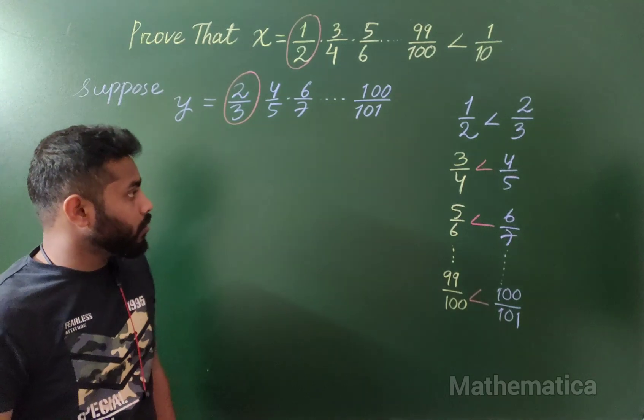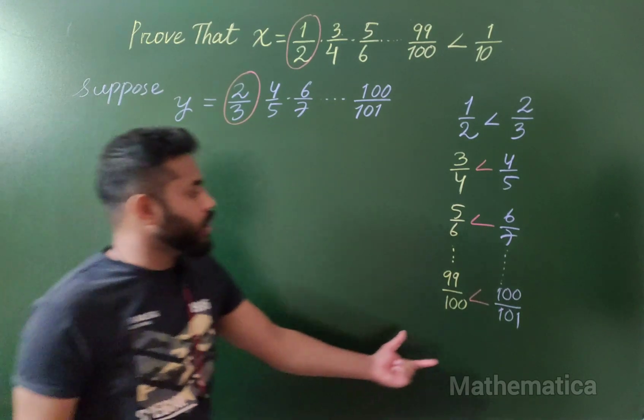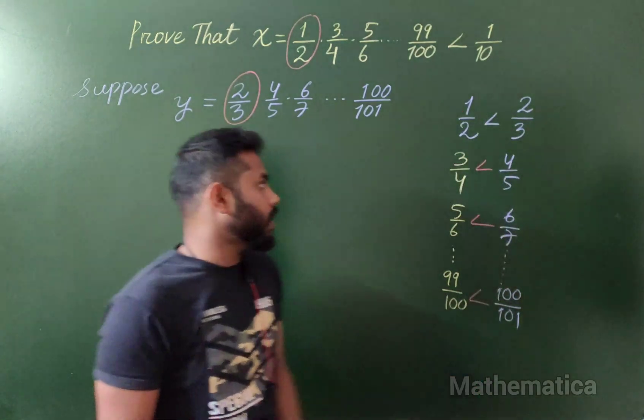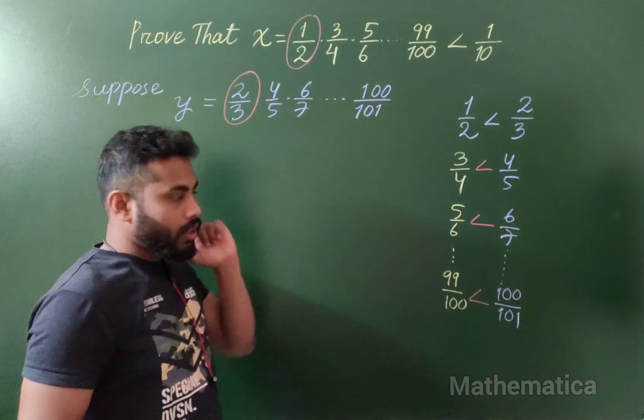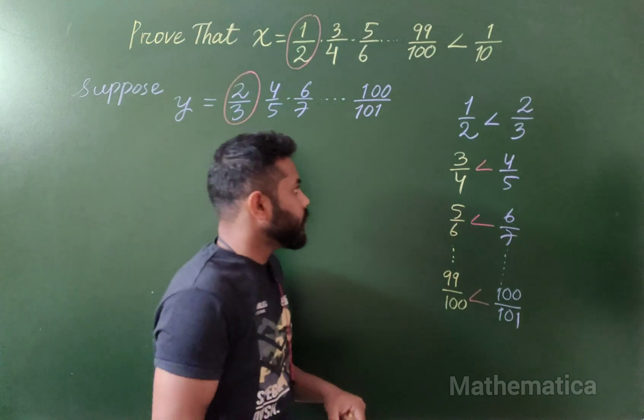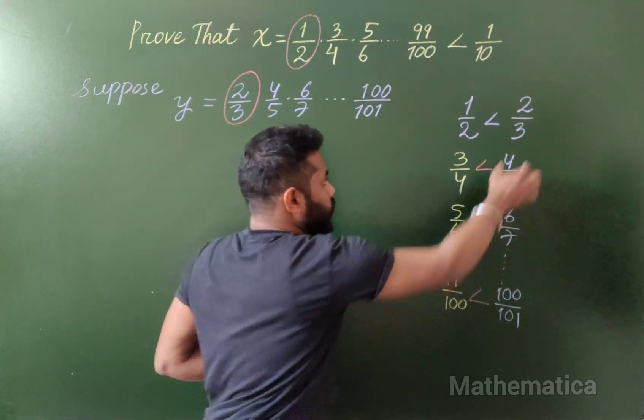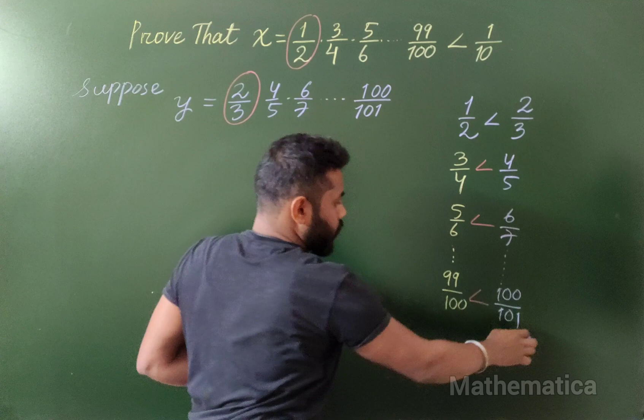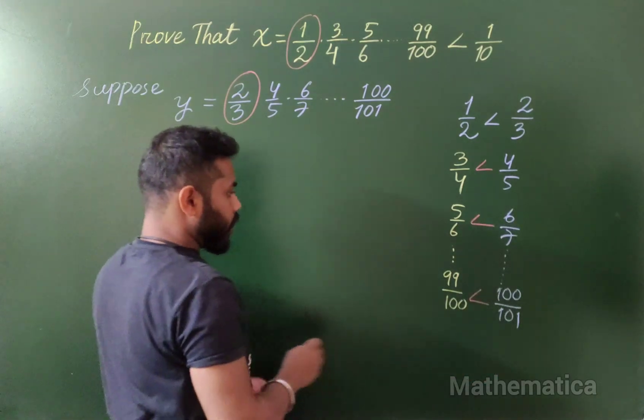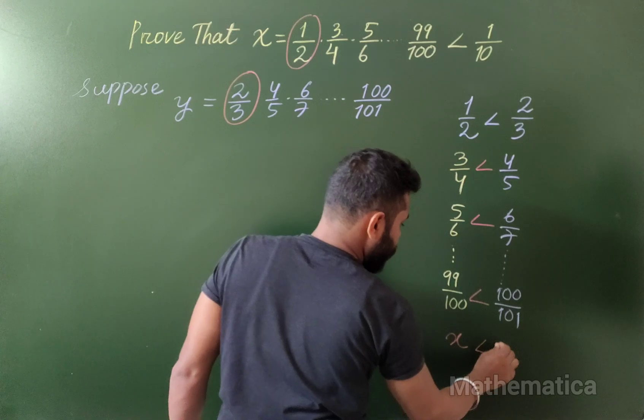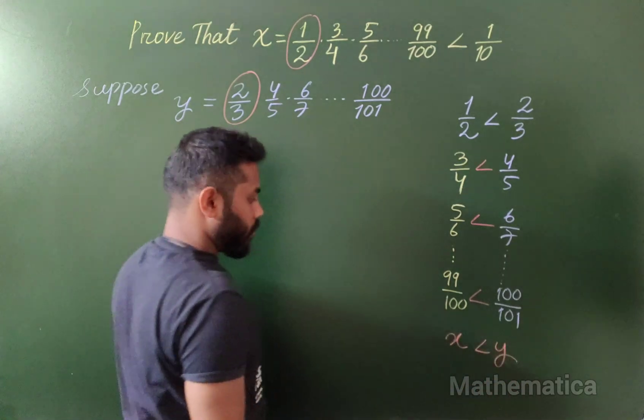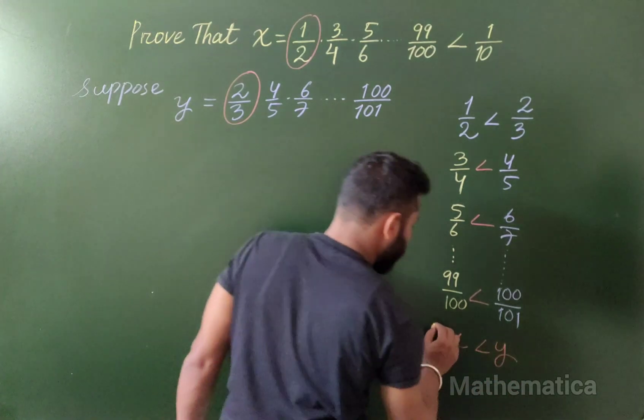Let's multiply all these terms simultaneously. What we'll get is this quantity equals x and this quantity equals y. So it is clear that x is less than y. Here is the most important result.